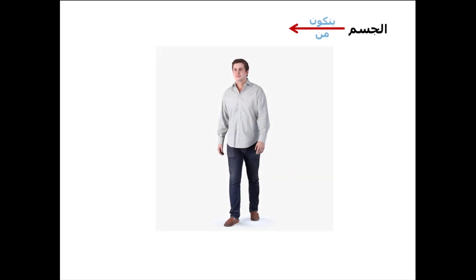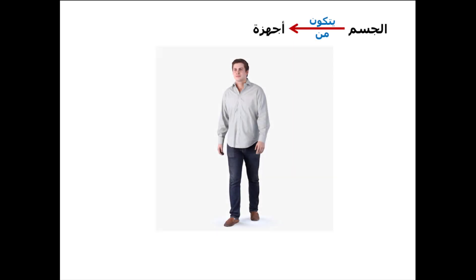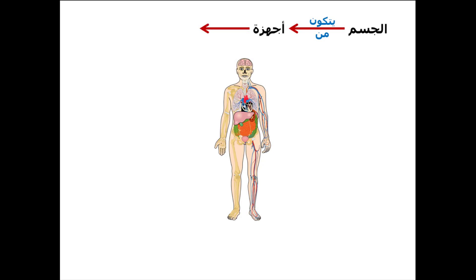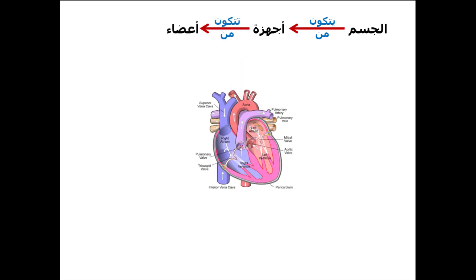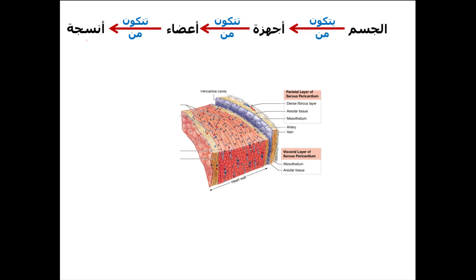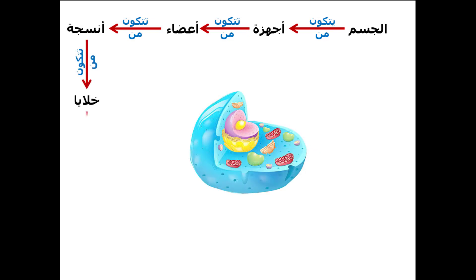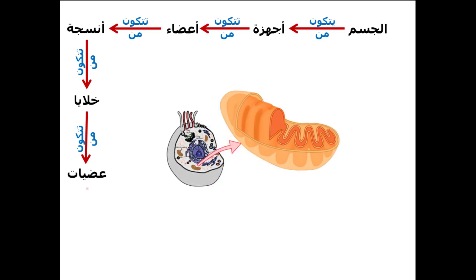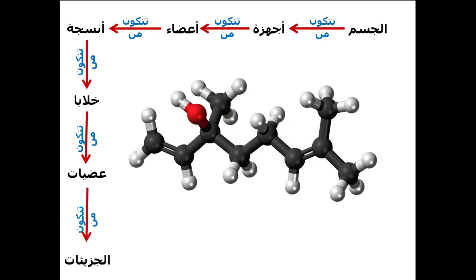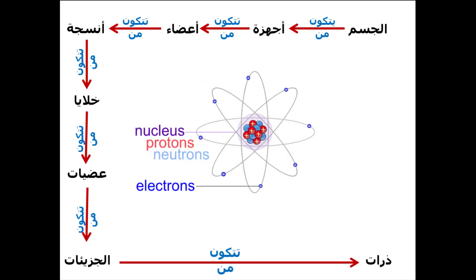جسم الكائن الحي بيتكون من مجموعة من الأجهزة، كل جهاز بيتكون من مجموعة من الأعضاء، كل عضو بيتكون من مجموعة من الأنسجة، كل نسيج يتكون من مجموعة من الخلايا، وكل خلية تتكون من مجموعة من العضيات، وكل عضية تتكون من مجموعة من الجزيئات، وكل جزيء يتكون من مجموعة من الذرات.